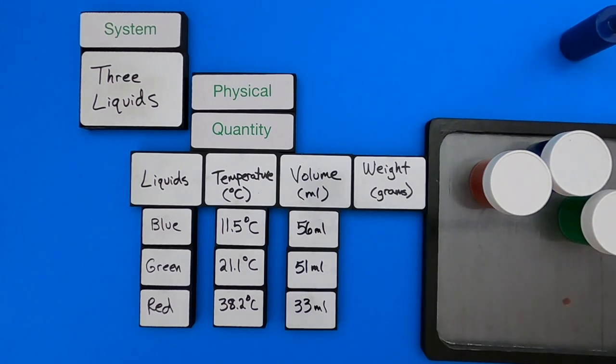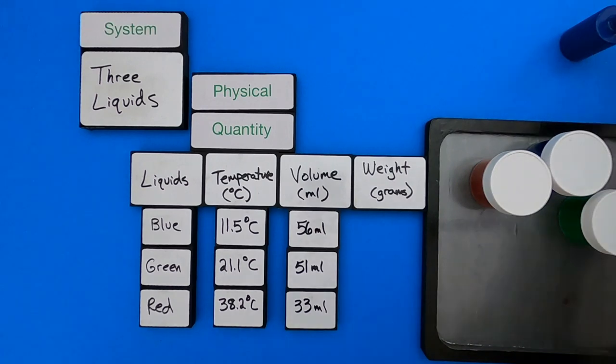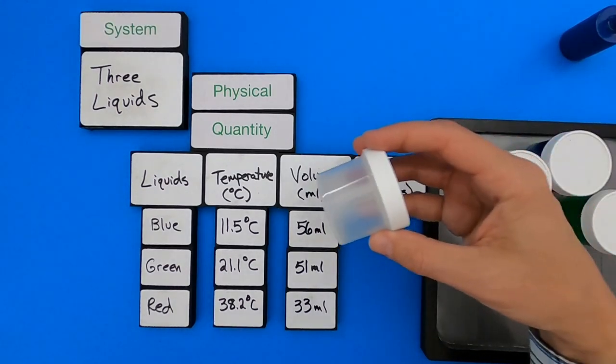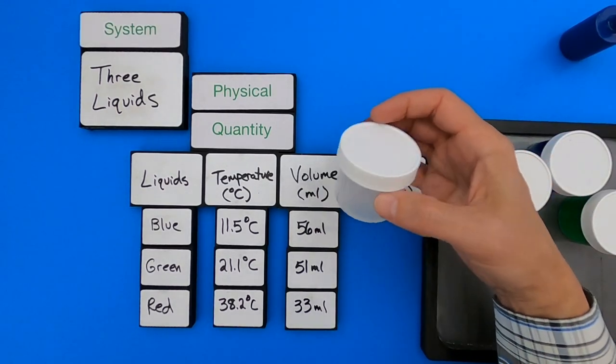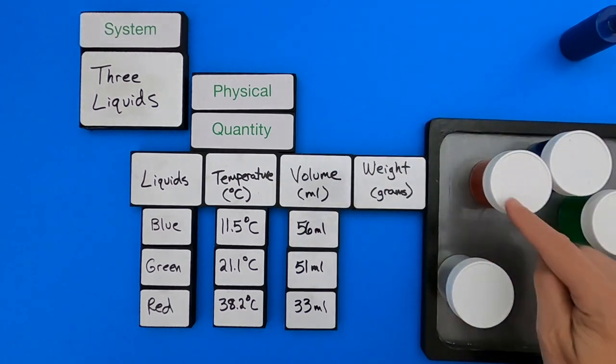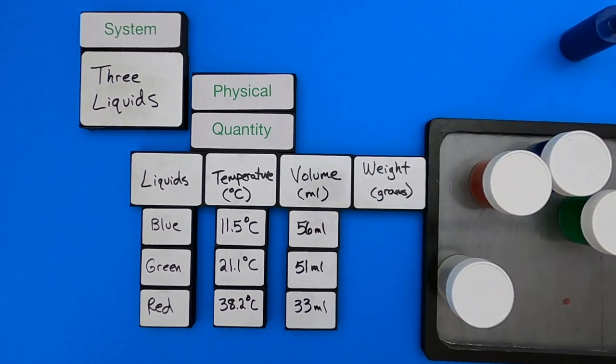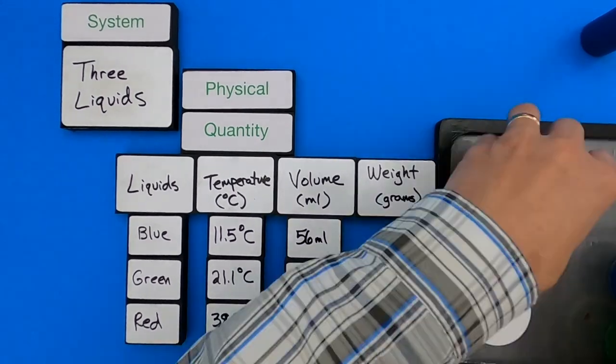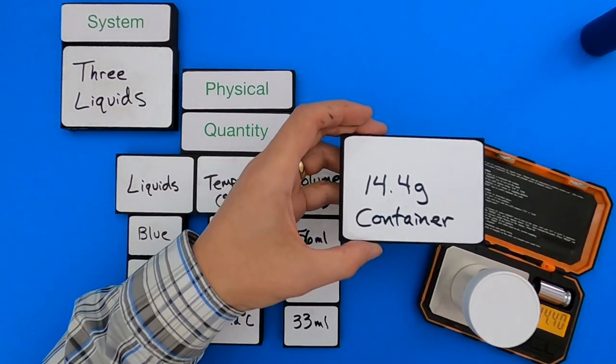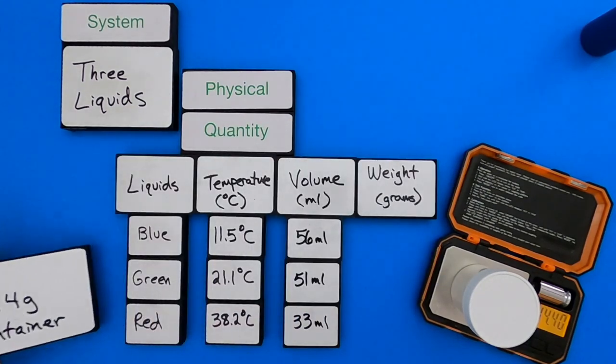The final thing I'm going to do is I'm going to look at the weight. Getting the weight of fluids is sometimes hard, so what I'll do is probably take the weight of an empty container, and then assuming these containers are all the same, I'll see what the difference is to calculate the weight. So the weight of the container is 14.4 grams.